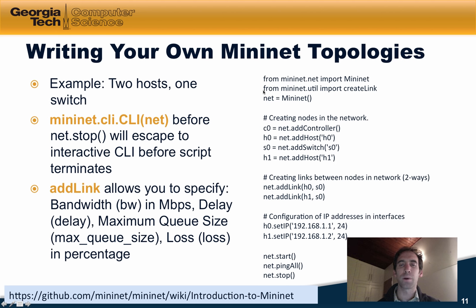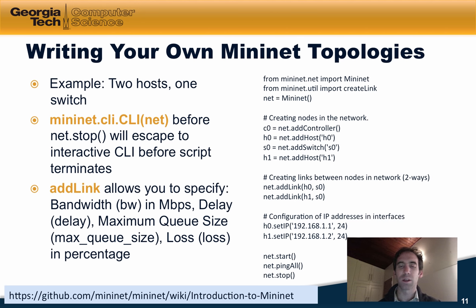Let's walk through this code briefly. The first two lines import some modules that we need. The next line creates an instance of the Mininet emulator. Then we create the nodes we will use in this network: two hosts, H0 and H1, a switch S0, and a controller C0. After we create our nodes, we can create links between them using the addLink method. Here we create a link between H0 and S0, and a second link between H1 and the same switch S0, so both hosts are connected to that switch.